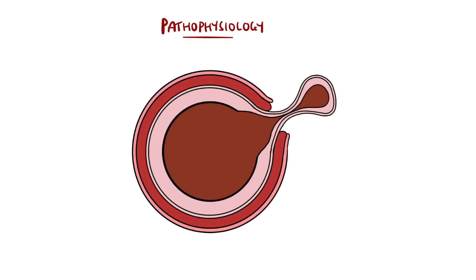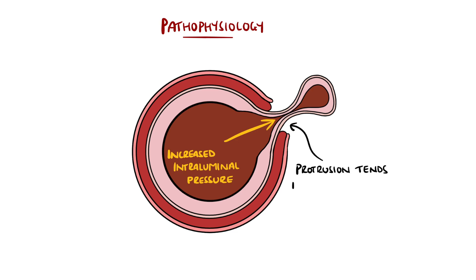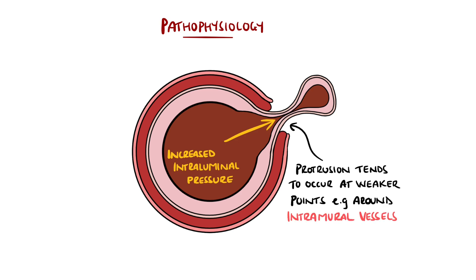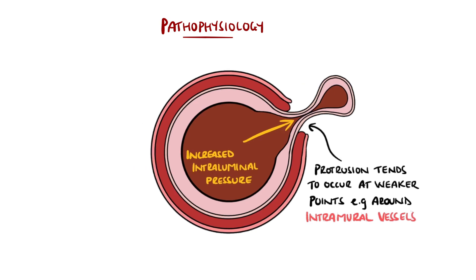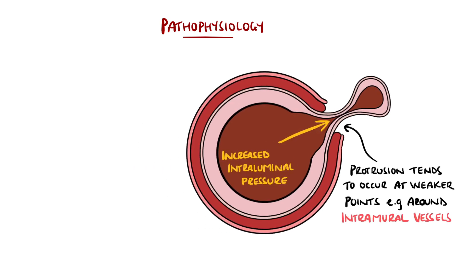The exact mechanism is not known, but is thought to be linked to increased intraluminal pressure leading to protrusion of the mucosa and submucosal layers through the weaker portions of the muscular layers, usually around the intramural vessels. This may explain why the sigmoid is more commonly affected, due to the smaller diameter. Formation is thought to be multifactorial.